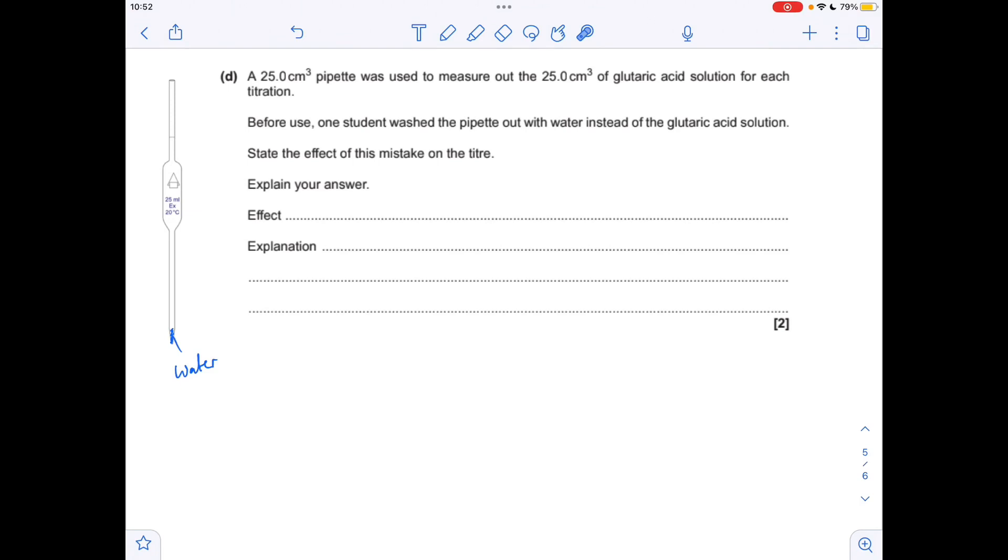The other way you could explain it is the glutaric acid, because it's got a tiny amount of water in compared to before, it's more dilute or it's less concentrated, and therefore the titre is going to be lower. So any of those three explanations will be fine: using less moles of the acid, it's more dilute, or it's less concentrated.